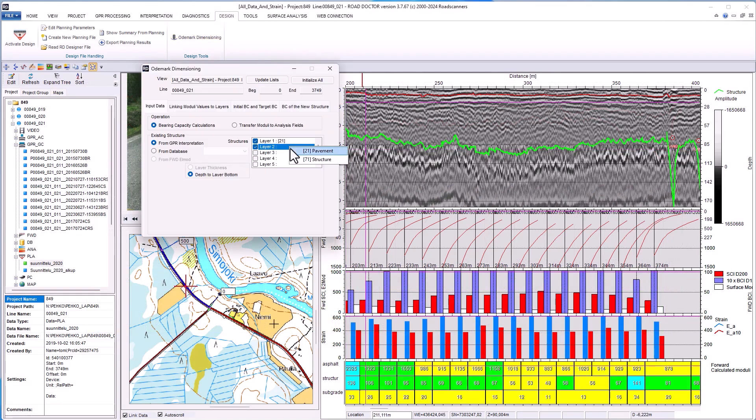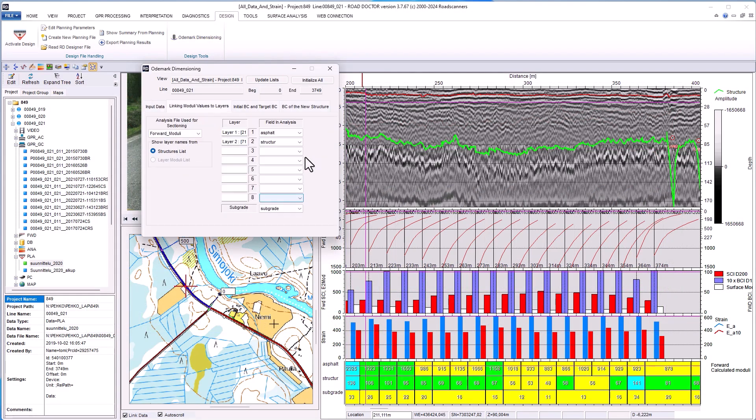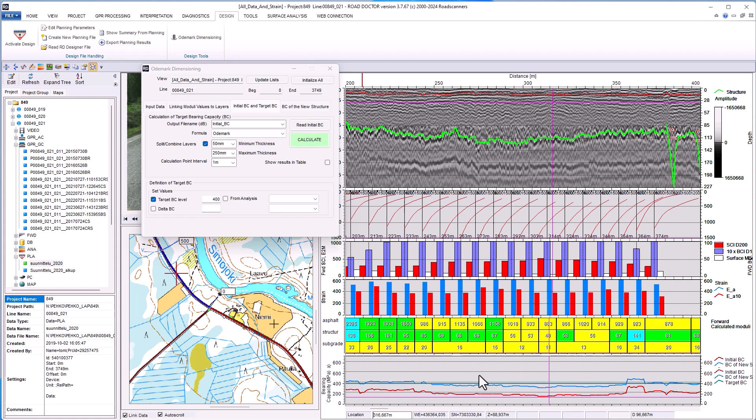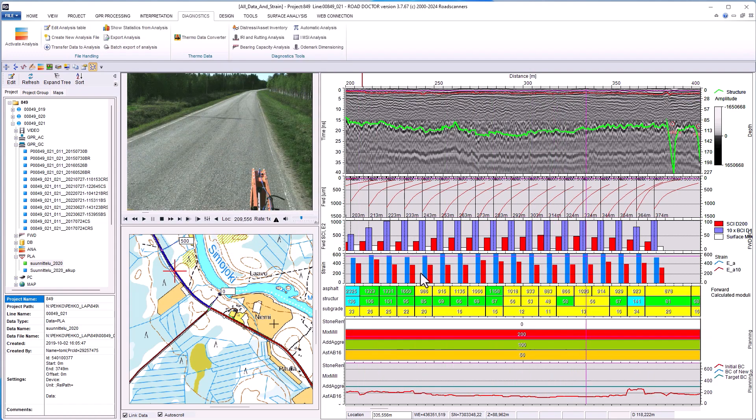For low-volume paved and gravel roads pavement design, RoadDoctor also offers Odemark design feature. This model allows designers to calculate the bearing capacity of the current pavement structure based on the layer thickness and moduli values of the current road structures and subgrade beneath.